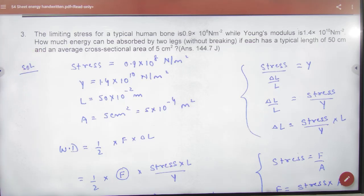Subjective sheet number 54. Limiting stress for a typical human bone is given. Human bone stress given and Young's modulus is given. How much energy can be absorbed by two legs without breaking if each has a typical length of 50 cm and average cross section area of 5 cm²?